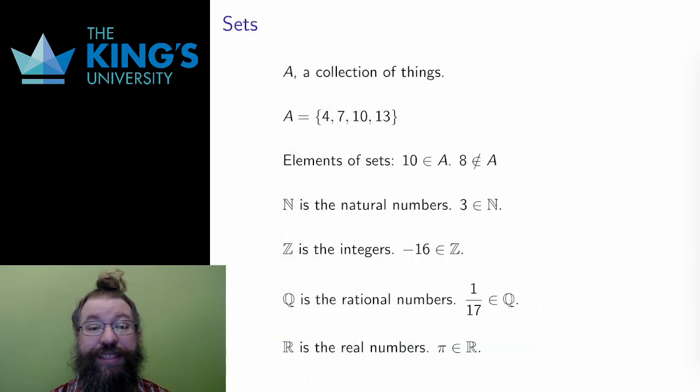And finally, this stylized R is the real numbers, the rationals and the irrationals. Irrational numbers, numbers which cannot be written as fractions, such as pi, are elements of the real numbers.